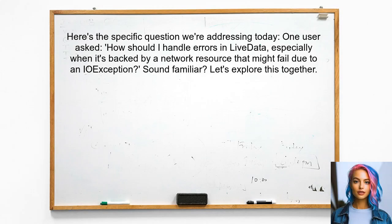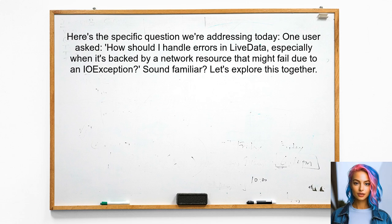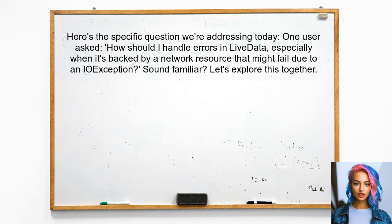Here's the specific question we're addressing today. One user asked: how should I handle errors in live data, especially when it's backed by a network resource that might fail due to an IO exception? Sound familiar? Let's explore this together.